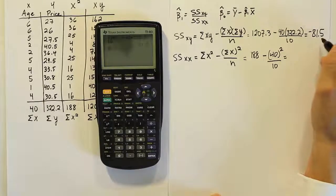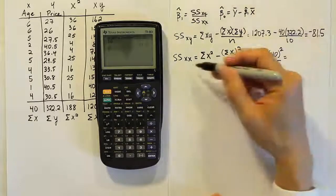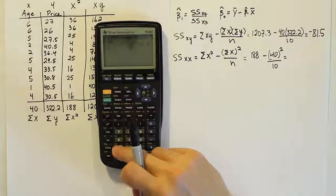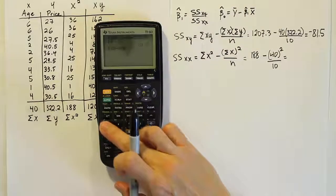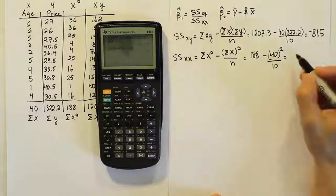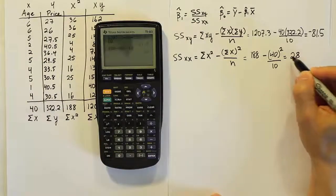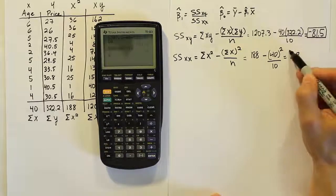Please remember that that number can be negative because it's the mixed term, xy. It's allowed to be negative. This one cannot be negative, so if we get the next one as negative, we made a mistake. So 188 minus 40 squared divided by 10, and our result is 28, and of course, it's positive as it should be. These two numbers, then, are to be used in our next step.